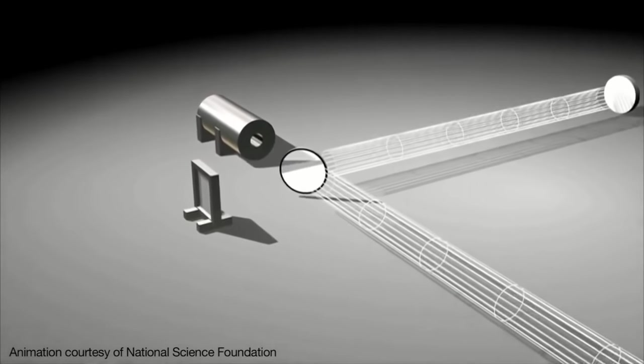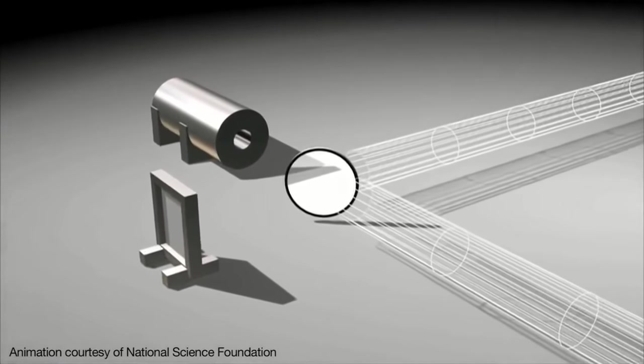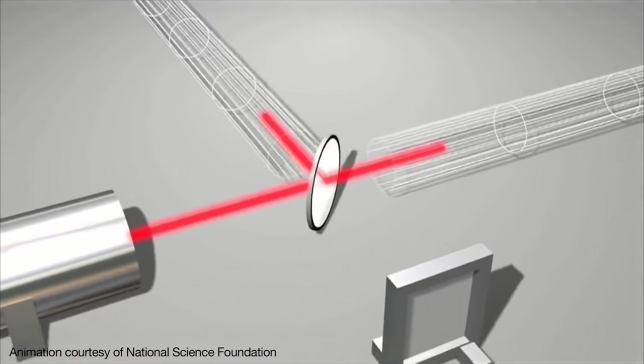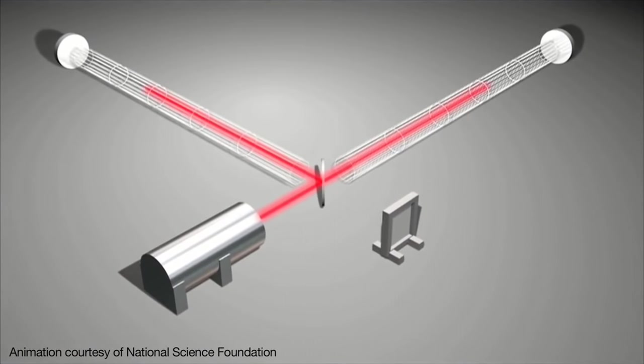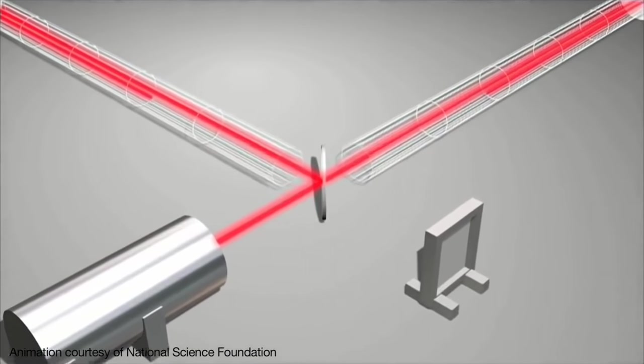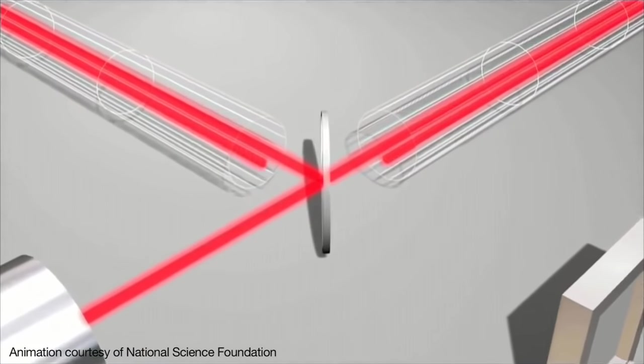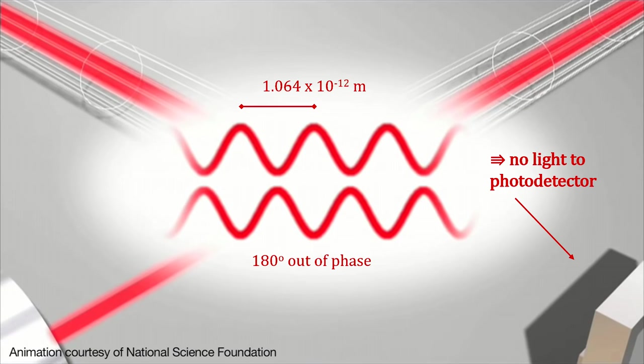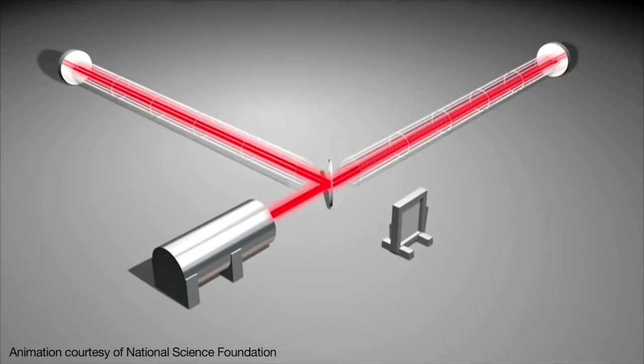The laser light is split and sent to the two mirrors. On return, they are recombined and sent to the photodetector. The beams returning from the two arms are kept out of phase so that when the arms are both in sync as when there is no gravitational wave passing through, their light waves subtract and no light arrives at the photodetector.